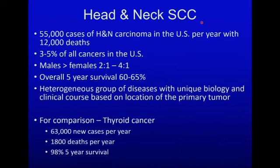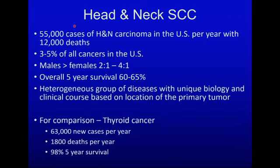Now that we've reviewed neck node levels, we begin an overview of head and neck squamous cell cancer. This disease affects about 55,000 people in the United States every year with 12,000 deaths. Thyroid cancer has an incidence of about 63,000 new cases per year, so these are roughly equally common. However, head and neck cancer is far more lethal, causing at least six times more deaths per year. There is a five-year survival of about 60 to 65%, compared to 98% for thyroid cancer. It is more common in males and is a heterogeneous group of diseases with unique biology, clinical course, and therapy based on primary tumor location.